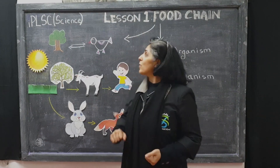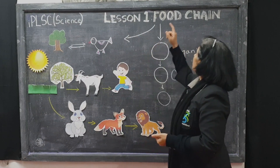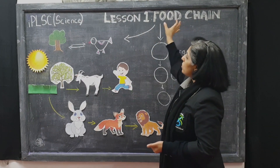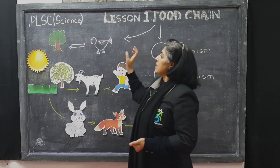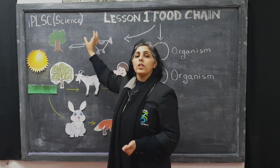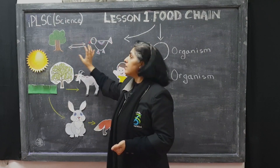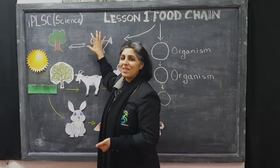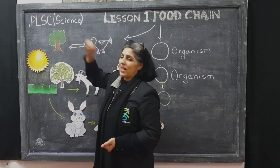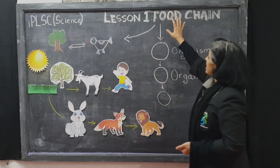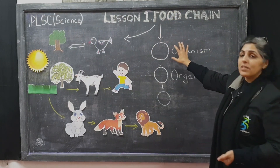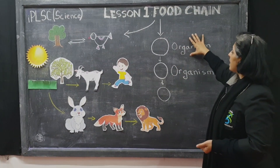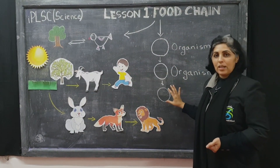Today's lesson one is going to be on food chain. Food chain is something through which the scientists can show the interdependence of animals and trees. It is the sequence through which we can see which organism eats which one.